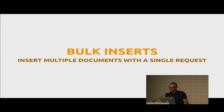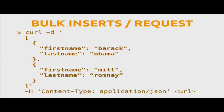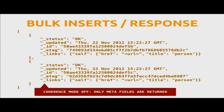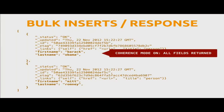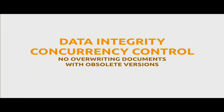There is also support for bulk inserts. You can send multiple documents to the API endpoint with a single request. Here we are sending two documents, and what you get back is an array of responses, because validation is performed on every single document. You can switch coherence mode off (the default), in which case you only get back the metadata useful for subsequent requests. Or you can say, every time send me back the whole document including metafields.